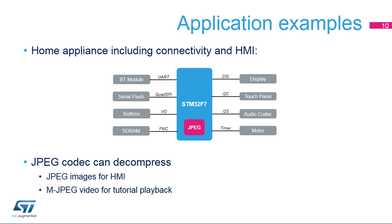Wearable applications require low power management functions together with a high-quality user interface. In this scope, the JPEG Codec can be used to decode compressed background images or user pictures, or even to play back certain videos for tutorials.